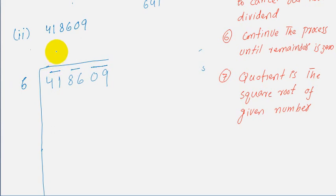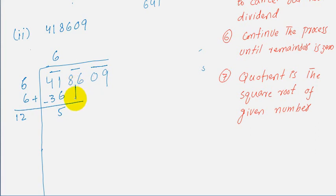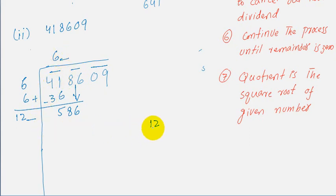6 times 6 is 36, so we get remainder 5. The next step is to double the divisor: adding 6 gives 12. Since 12 is greater than 5, we take our second pair down, which is 86, making the new dividend 586. Our new divisor is 12.